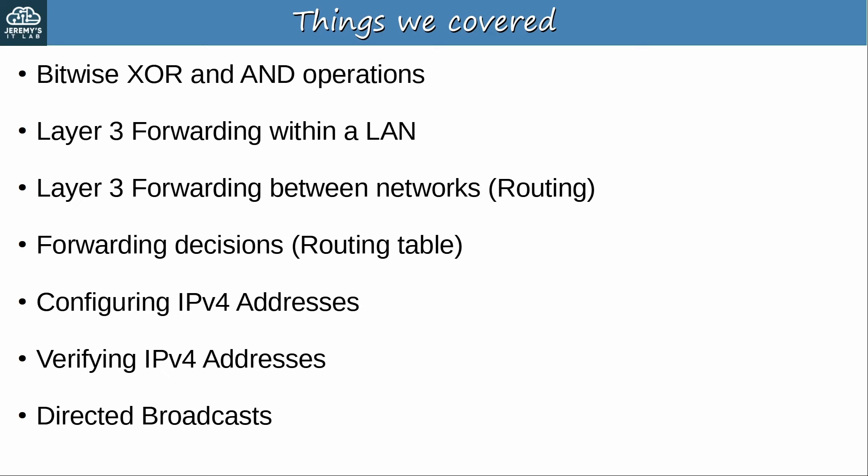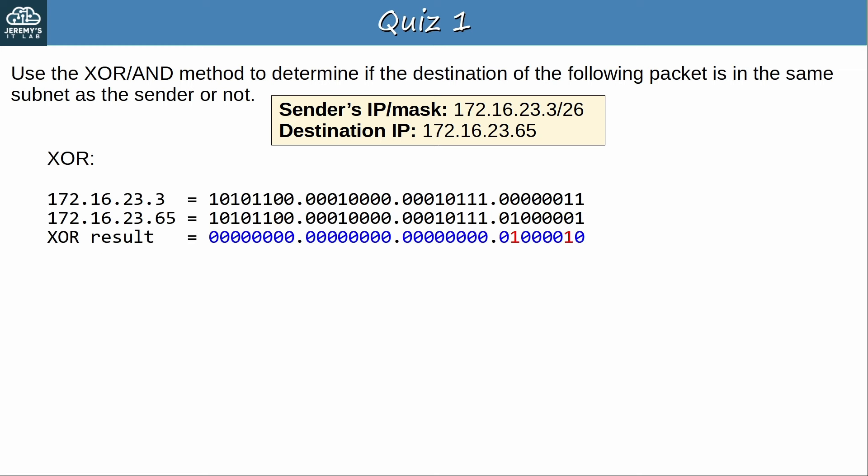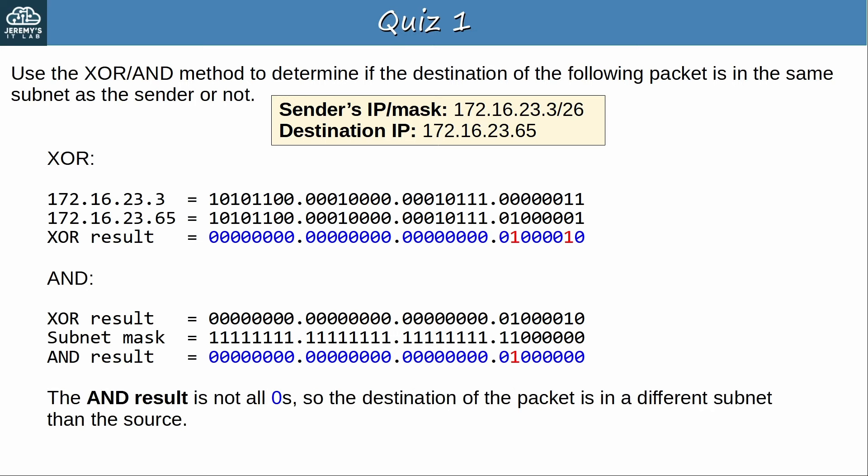Quiz question 1: Use the XOR AND method to determine if the destination of the following packet is in the same subnet as the source or not. The sender is 172.16.23.3/26, and the packet's destination is 172.16.23.65. You won't be asked to do this on the ENCOR exam, but it's valuable information to deepen your understanding. Here is the XOR operation — there are two bits that differ, both in the last octet. Now using AND to compare the XOR result and the sender's subnet mask — the AND result is not all zeros.